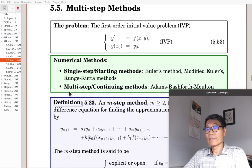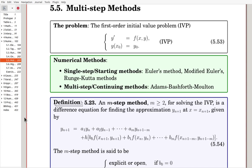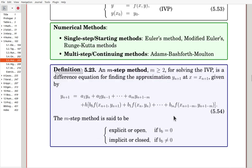Single-step methods are sometimes called starting methods, while multi-step methods are called continuing methods. Here we have the definition for an M-step method for solving the initial value problem. We try to find approximation Y_M+1 given by this equation with multiple Y values and this linear combination of multiple slope values.